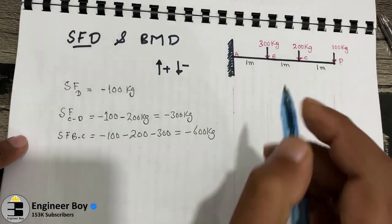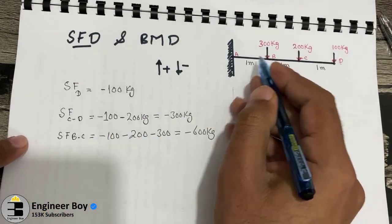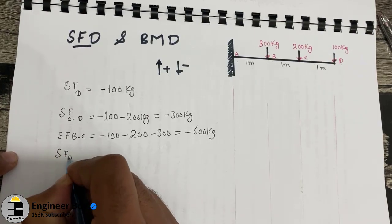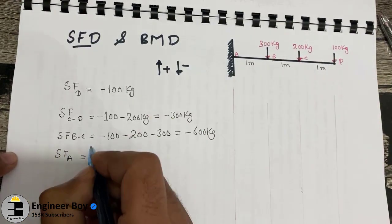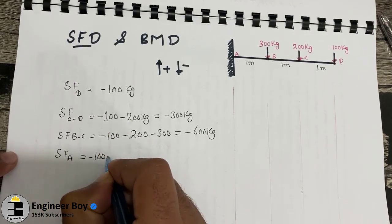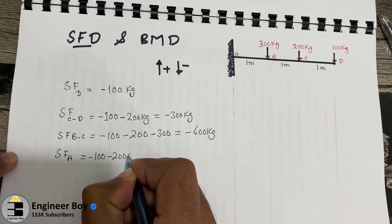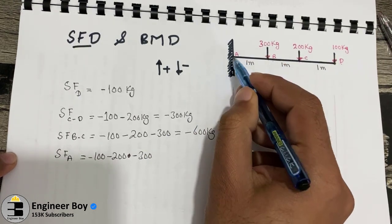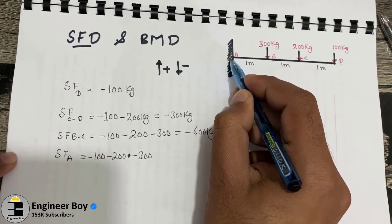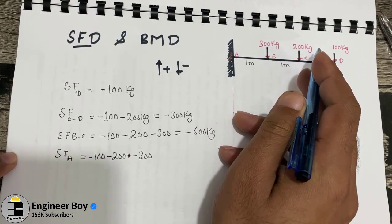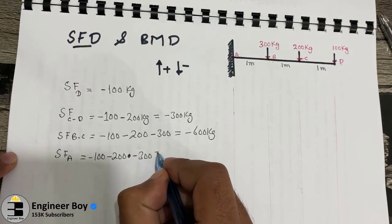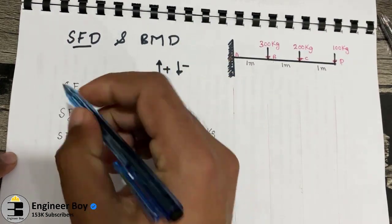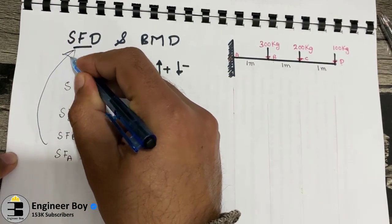At point A, which is the support, we sum all forces: minus 100 kg at D, minus 200 kg at C, and minus 300 kg at B. The support at A carries the total load, giving a shear force of minus 600 kg. This is the data we use to draw the shear force diagram.